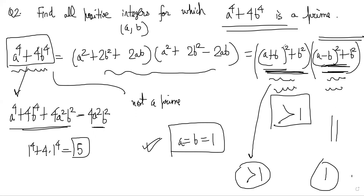So the only prime of the form a⁴ + 4b⁴ is five, when a = b = 1. Any other values of a and b will make both factors greater than one, and once you have two integers both greater than one multiplying together, that number is no longer prime.